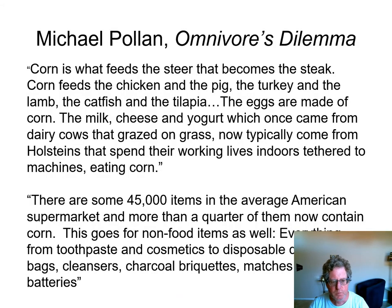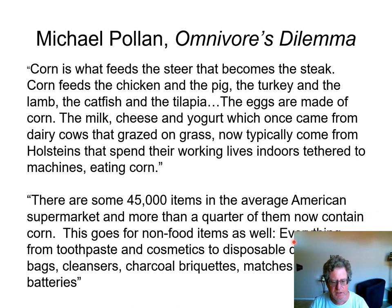Here's a book by Michael Pollan. It discussed how corn is used. One thing he said: about a quarter of all 45,000 items in the supermarket are made with corn — that's about 11,000 items. This goes for non-food items as well: toothpaste, cosmetics, disposable diapers, trash bags, cleansers, charcoal briquettes, matches, and batteries. A lot of that non-food industrial category is all these different products that you wouldn't know are made with corn.